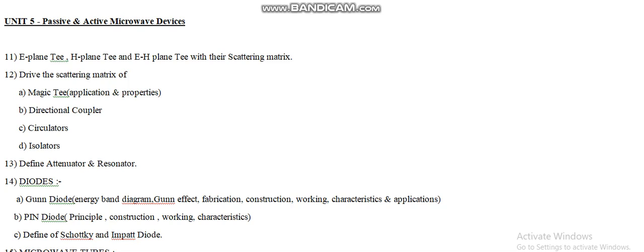Moving on to question number thirteen, define attenuator as well as resonator. This is a short-type question that will come in the two-mark category. We also need to differentiate between the edge attenuator and resonator, so study that as well.